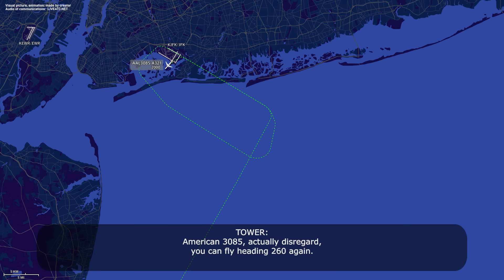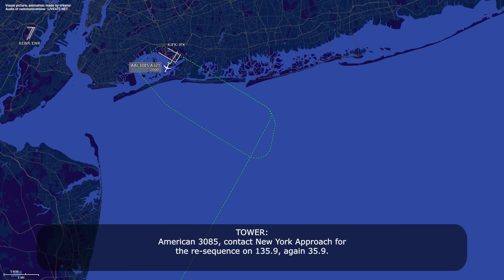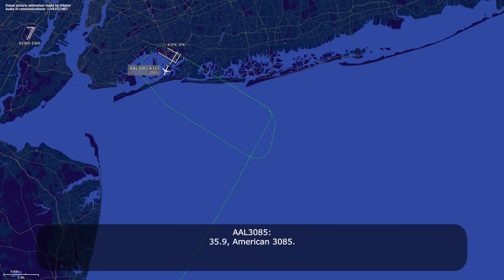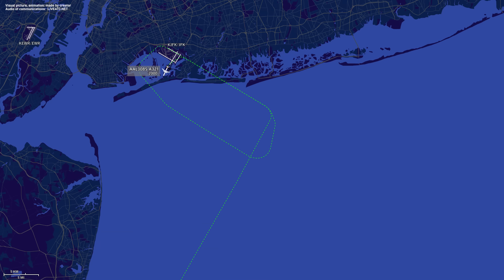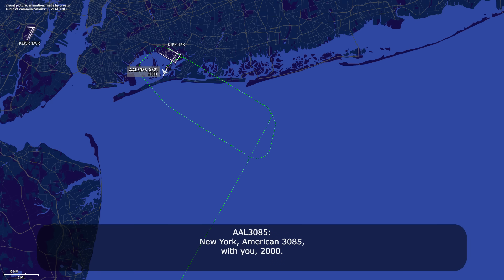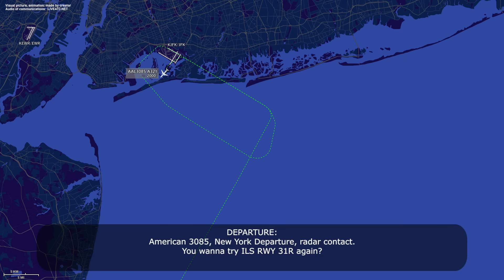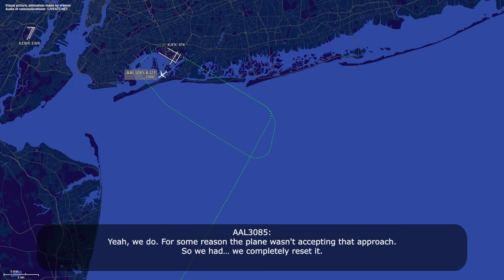American 385, contact New York Approach for the re-sequence on 135.9. 135.9, American 385. New York, American 385 with you at 2,000. American 385, contact C-15 — going around again? Yeah, we do. For some reason the plane wasn't accepting that approach, so we had to completely reset it. Okay, no worries, we'll get you right back in. Turn left heading 140, maintain 2,000.